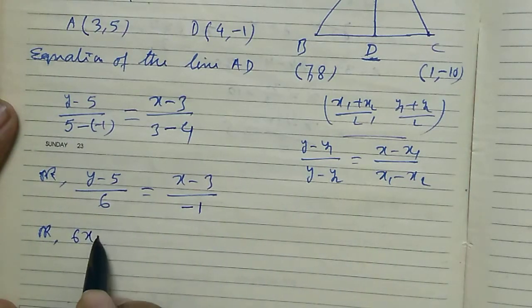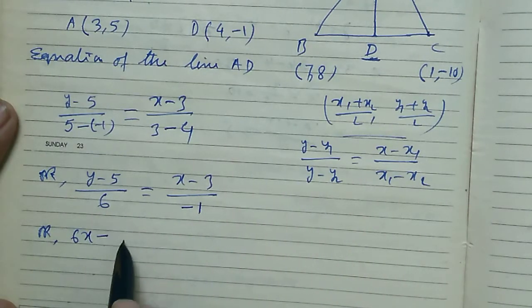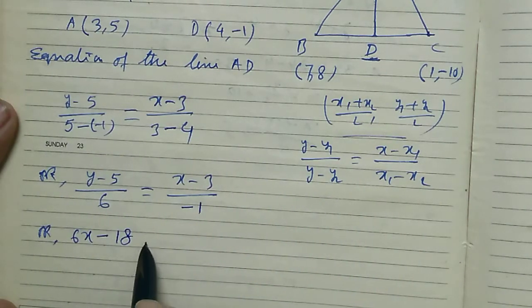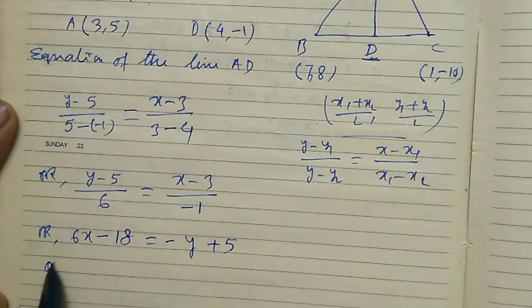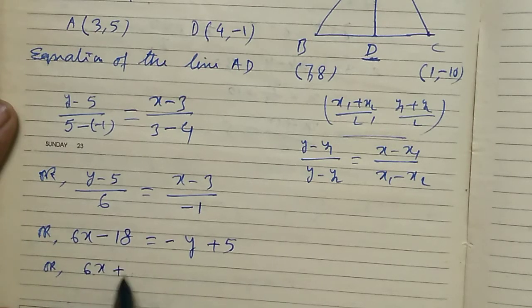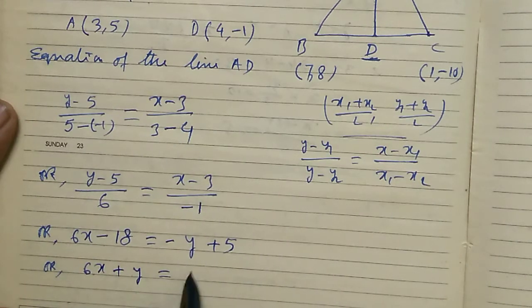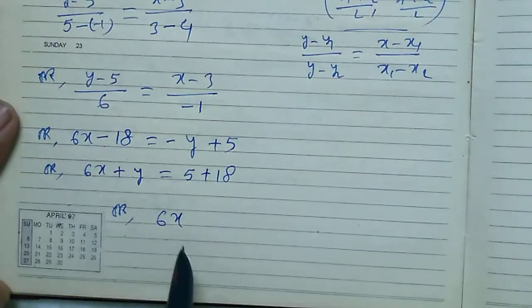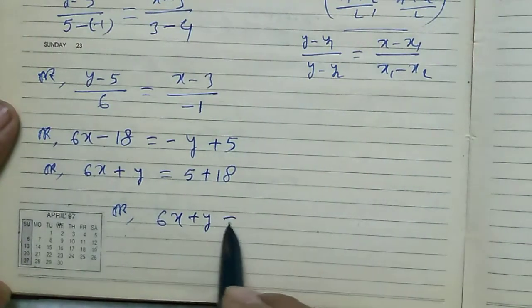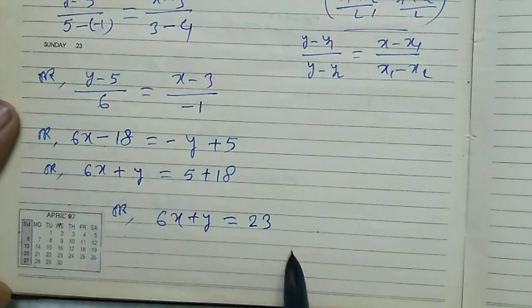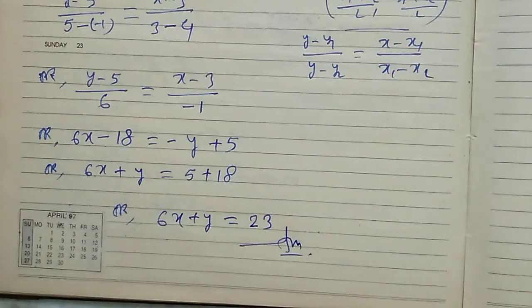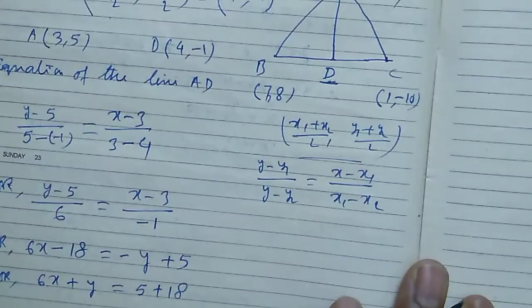6x minus 18 equals minus y plus 5, or 6x plus y equals 5 plus 18, or 6x plus y equals 23. And this is the equation for the median through A.